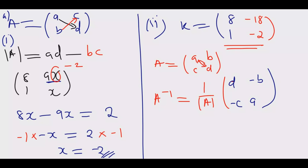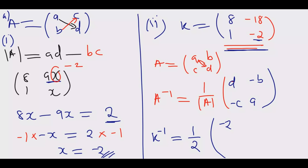Using this principle, K inverse equals 1 over the determinant of K, which is 2, so it is one-half. Then in the matrix we swap: wherever there was 8 we put negative 2, and wherever there was negative 2 we put 8. Then we negate the other entries: 1 becomes negative 1, and negative 18 becomes positive 18.